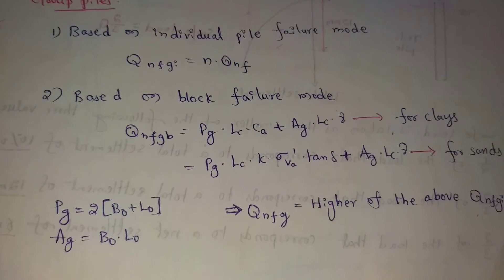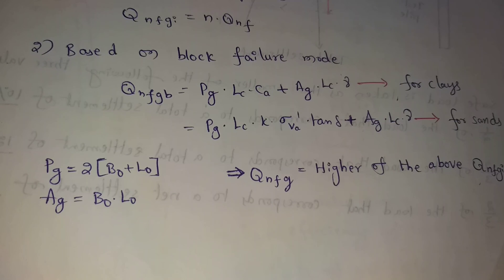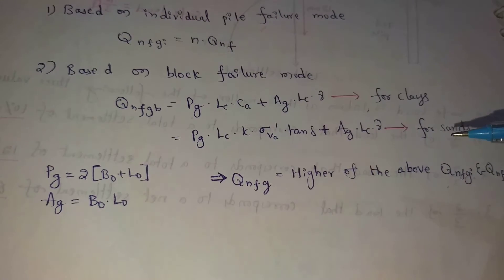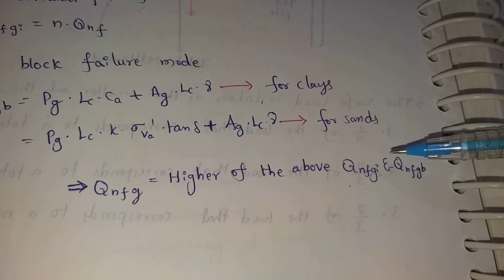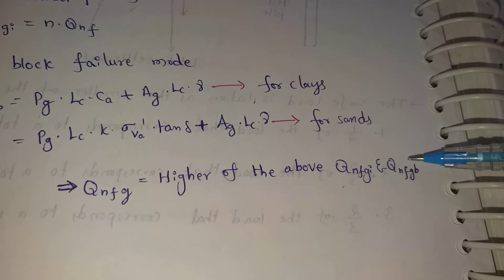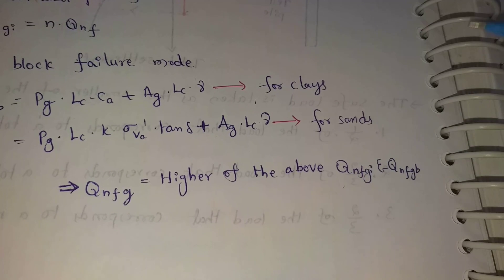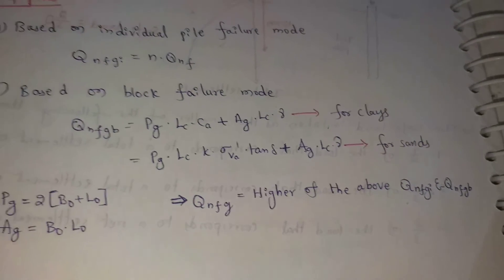QNF for the group pile is taken as the higher of the two values: Individual Pile Failure Mode and Block Failure Mode. This is how negative skin friction for group piles is determined.